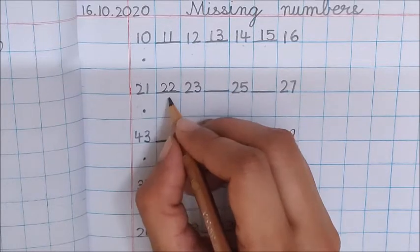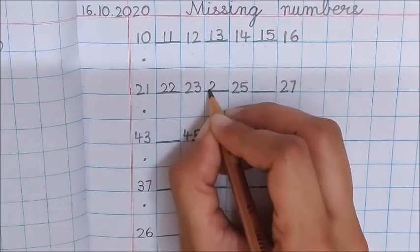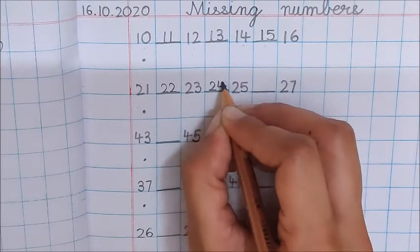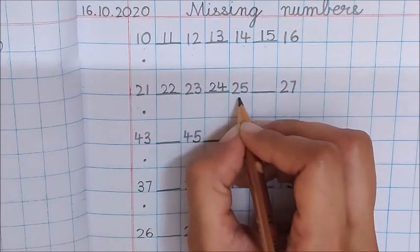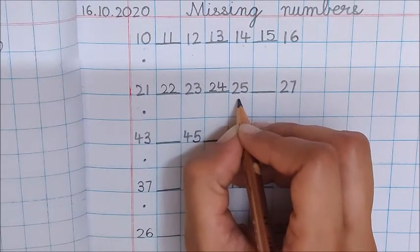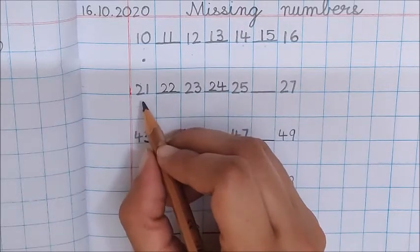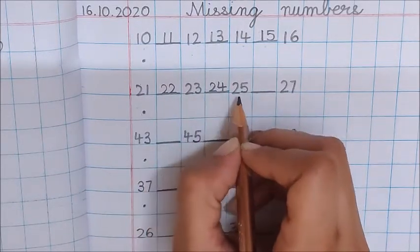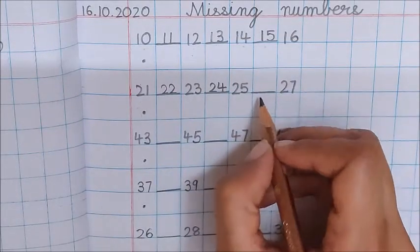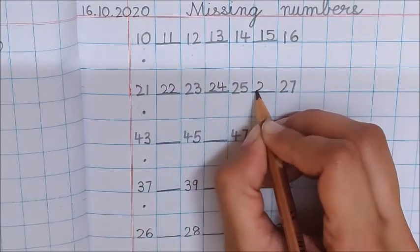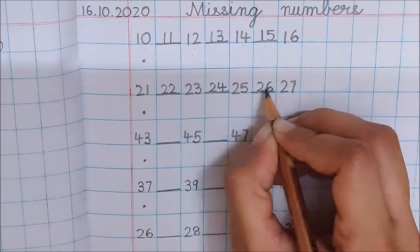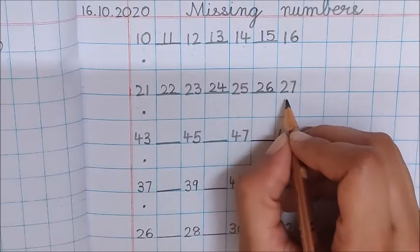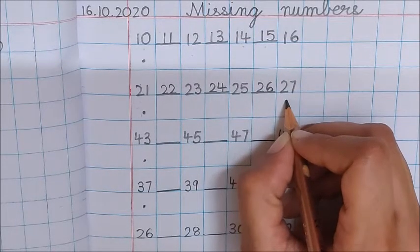23. What comes after 23 children? 21, 22, 23, 24. Then 25. Again, start from the beginning. 21, 22, 23, 24, 25. What comes after 25? 26. So we wrote here 26. What comes after 26? 27.